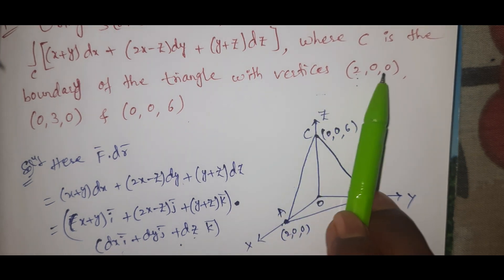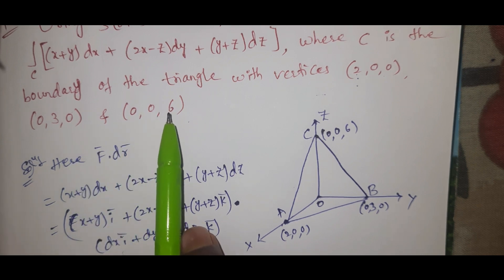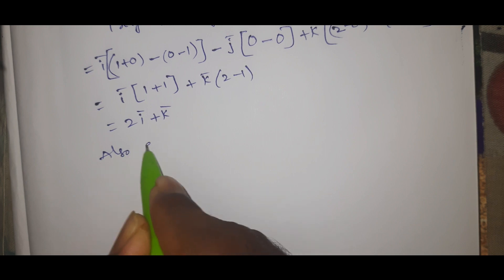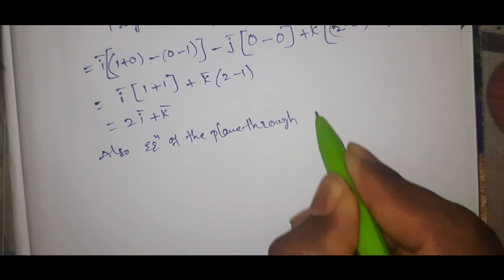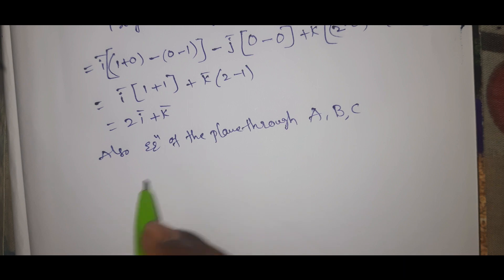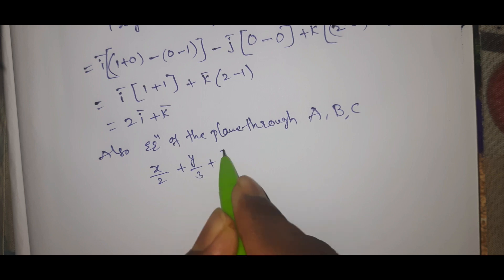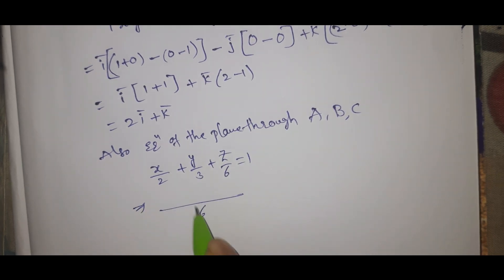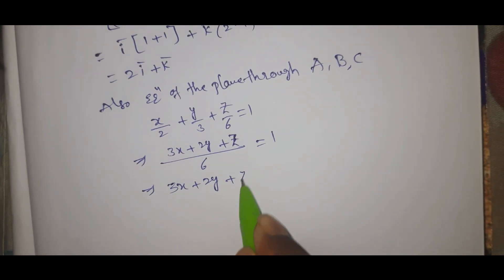Now we look at the vertices (2,0,0), (0,3,0), and (0,0,6) to find the equation of the plane through points A, B, and C. The intercept form gives x/2 + y/3 + z/6 = 1, which simplifies to 3x + 2y + z = 6.